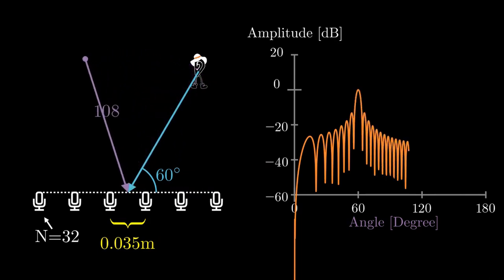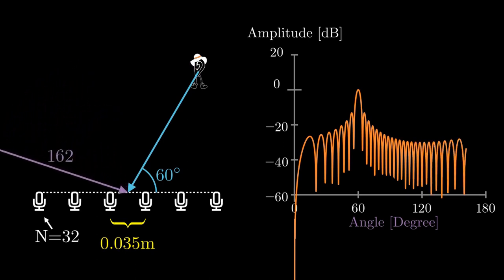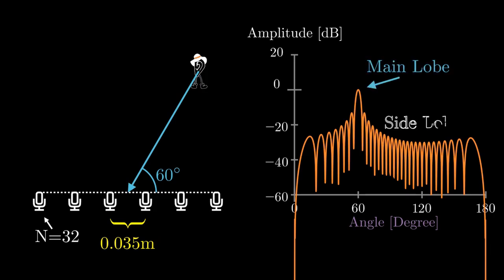You can see that the amplitude is quite low for signals coming from other directions than the source direction. This is good! Our beamformer performs well, suppressing the noise from other directions. Only for 60 degrees we can see that the amplitude reaches 0 decibel, which means that the source signal is maintained. We call this the main lobe, while the others are called side lobes. The number of side lobes depends on the number of microphones in the array. But this is topic for another video here.